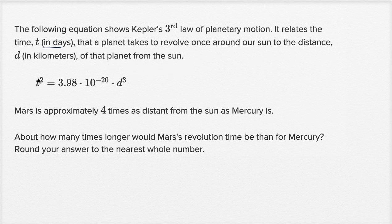So it tells us t, how many days, and it's in relation to the distance that that planet in kilometers is from the sun. Mars is approximately four times as distant from the sun as Mercury is.